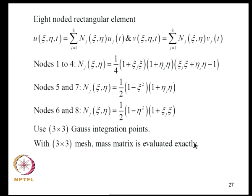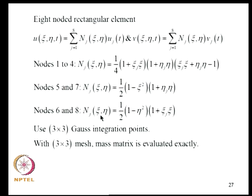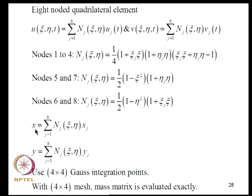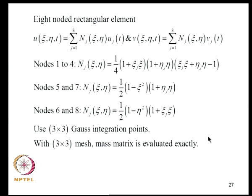For an 8-noded quadrilateral element (as opposed to rectangular), X and Y must also be interpolated using the same shape functions. In this case 4×4 Gauss integration points are needed to evaluate both stiffness and mass matrices. The mass matrix elements turn out to be polynomials since N^T*N remains polynomial, and with a 4×4 mesh the mass matrix is evaluated exactly. The stiffness matrix, due to the Jacobian inverse, continues to have difficulties as seen before.